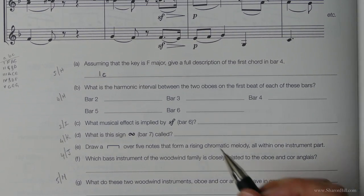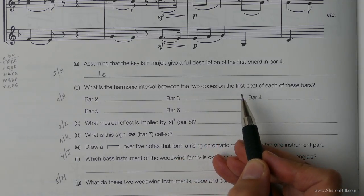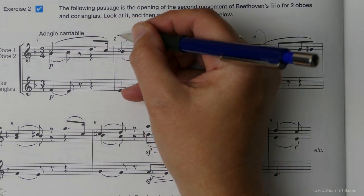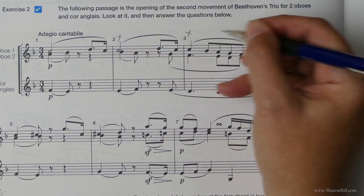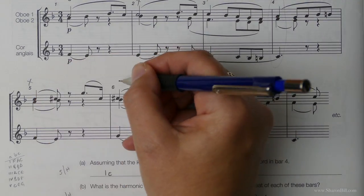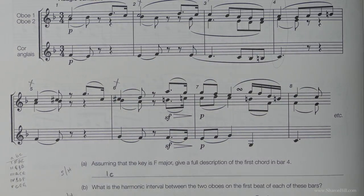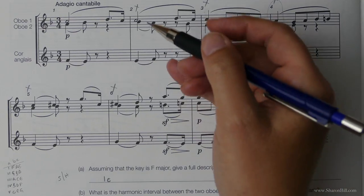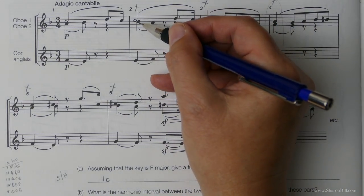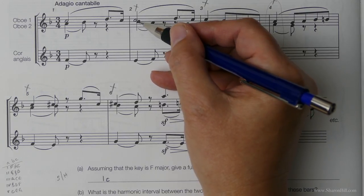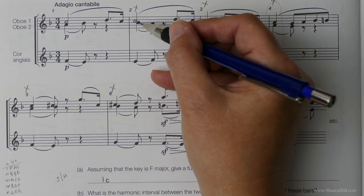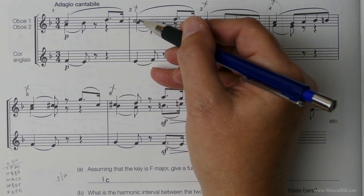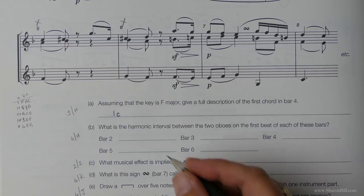We're asked to find the harmonic interval between the two oboes on the first beat of each of these bars. So we're looking at bars 2, 3, 4, 5 and 6. So we're looking at the first beat of bar 2, 3, 4, 5 and 6. And we're looking to the two oboes. So we're looking at these two notes here. And so the first one we have a B flat to a C. So that's a second of some sort. We take the lowest note as our key note. So if B flat major were our key note. Next order that is C which is part of B flat major scale. And so it's a major second.